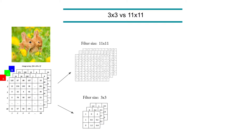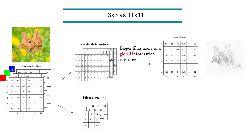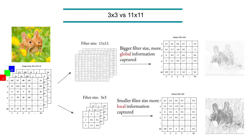Depending on the size, we will have different information. In case of a bigger filter, we will catch more global information and we lose some local information. We may get this kind of output after applying 11x11. And in case we apply a smaller filter, we will catch more local information, and it looks better — we are getting more precise, more semantic information.